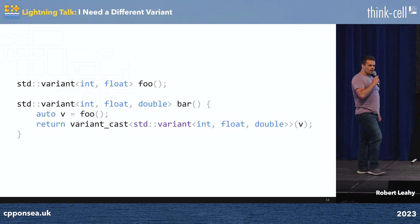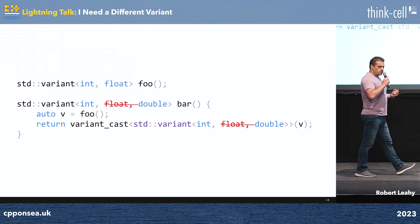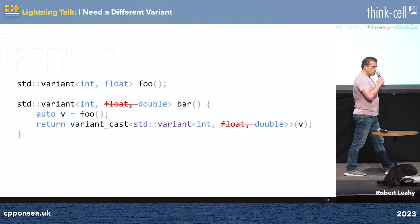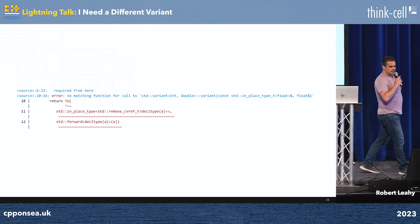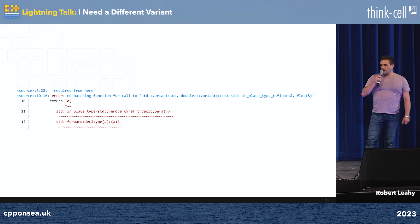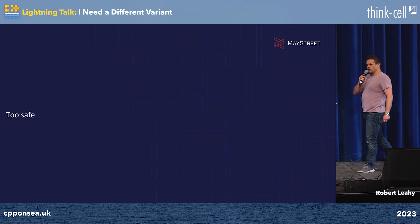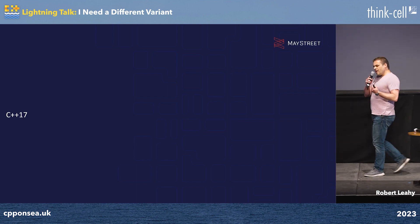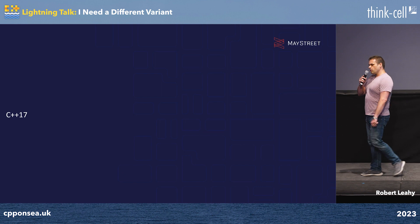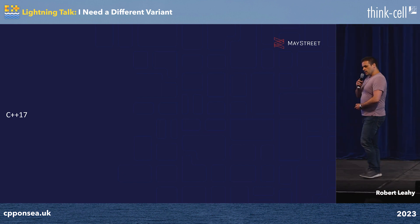What happens if we want to reflect that in our interface — if we want to write this code? Well, we have a problem, because the compiler doesn't really like that. Because we made a grave error when we were writing our cast: it is altogether too safe. And moreover, it only uses C++17. We have two more versions of the standard for me to show off on my slideware.